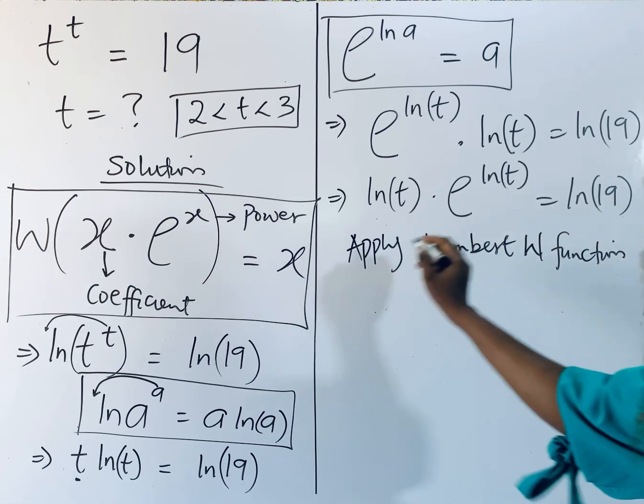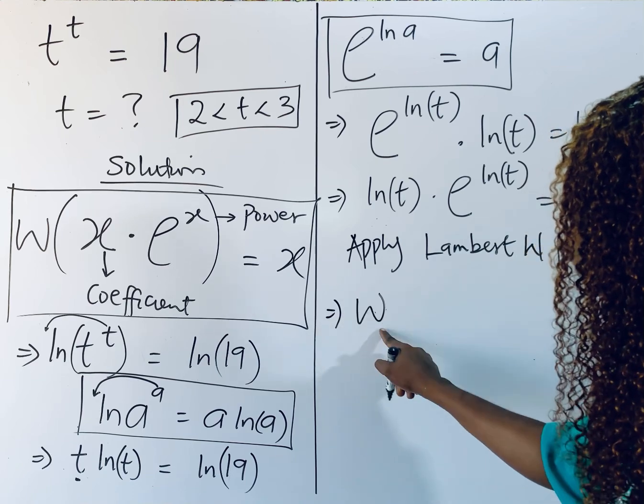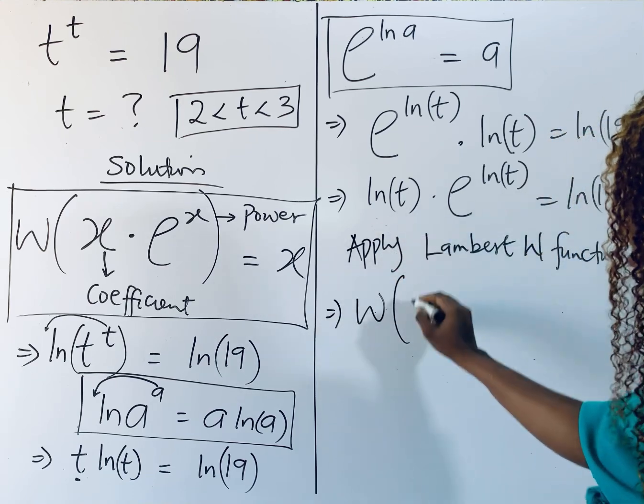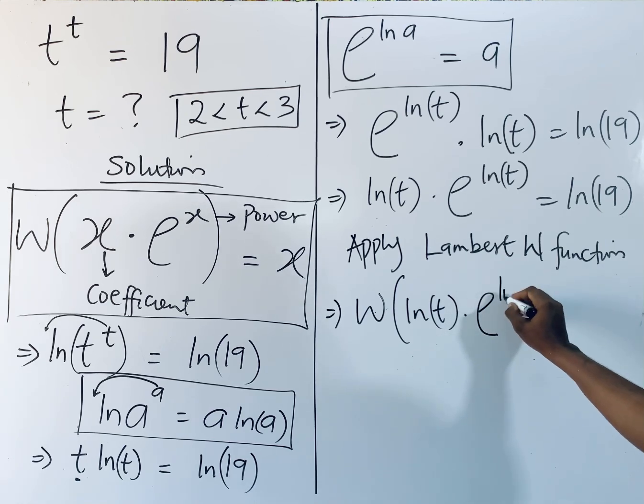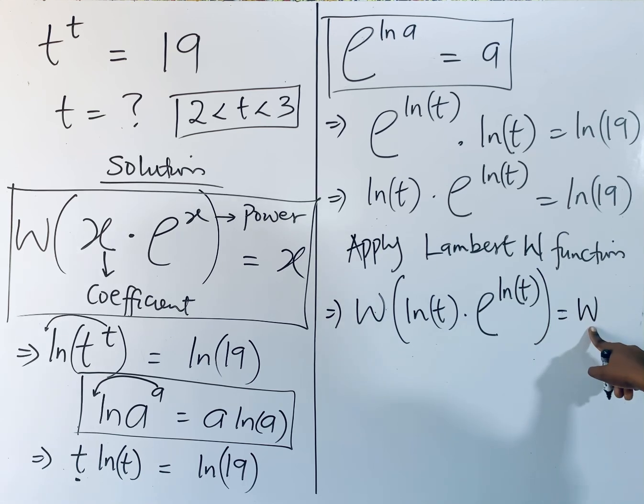So we have it: apply Lambert W function. If we do that, what do we have? We're going to have Lambert W of ln of t multiplied by e to the power of ln of t equals the Lambert W of ln of 19.